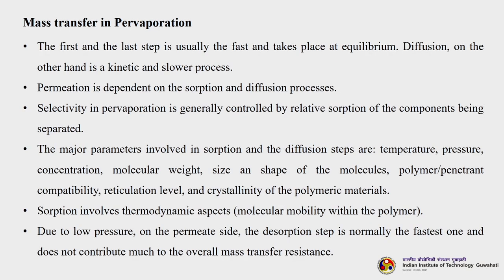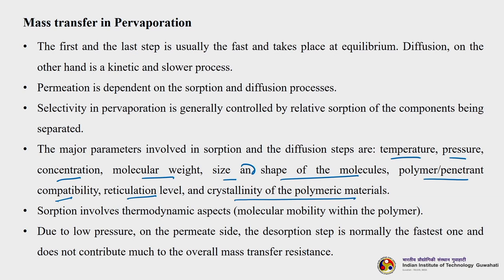The first and last steps usually take place at equilibrium. Diffusion, on the other hand, is a kinetic and slower process. Permeation is dependent on the sorption and diffusion processes. Selectivity in pervaporation is generally controlled by relative sorption of the component being separated. Major parameters involved in sorption and diffusion steps are: temperature, pressure, concentration, molecular weight, size and shape of molecules, polymer and penetrant compatibility, reticulation level, and crystallinity of the polymeric materials. The desorption step is normally the fastest and does not contribute much to the overall mass transfer resistance.